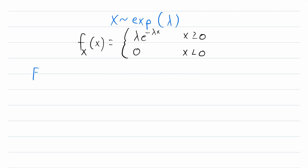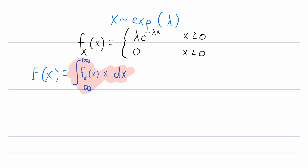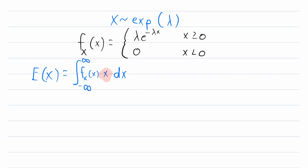Something vital to this lesson is recalling the definition of the expected value of a continuous random variable. It is the integral from negative infinity to positive infinity of the probability density function evaluated at x, multiplied by x, integrated with respect to x. Just like with discrete random variables, this is the sum of weighted outcomes — x is the outcome, and the PDF evaluated at x is the weight.